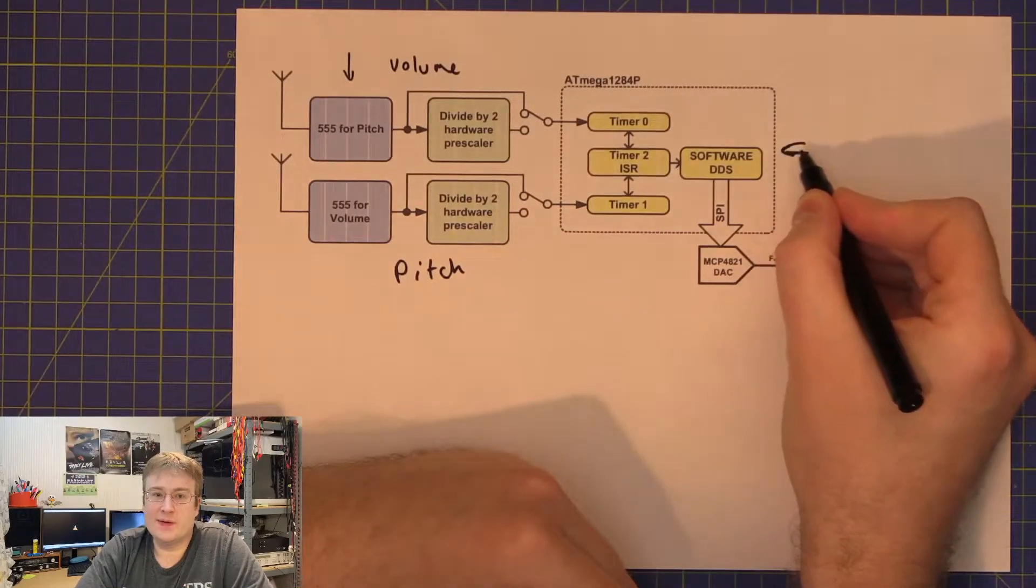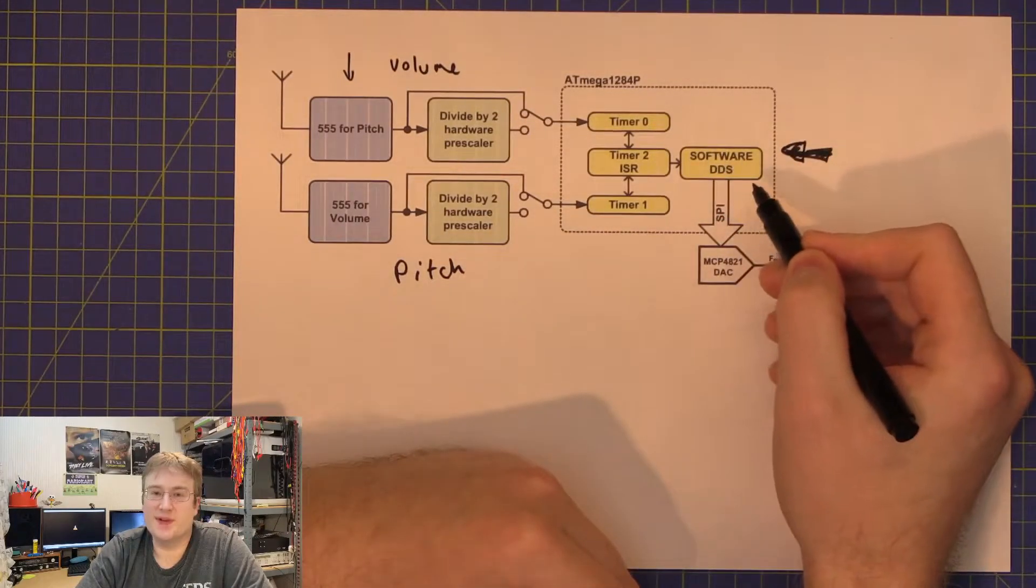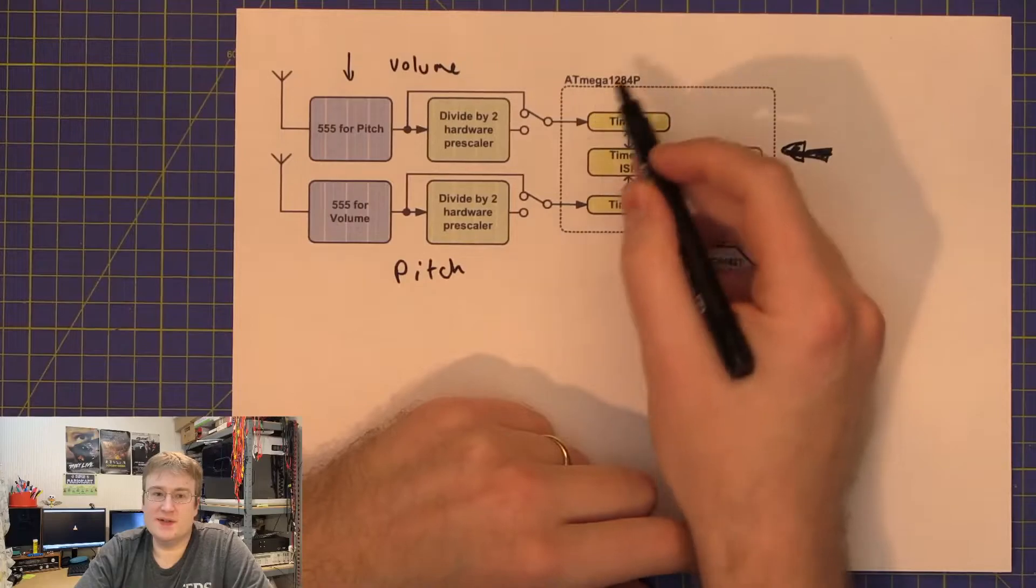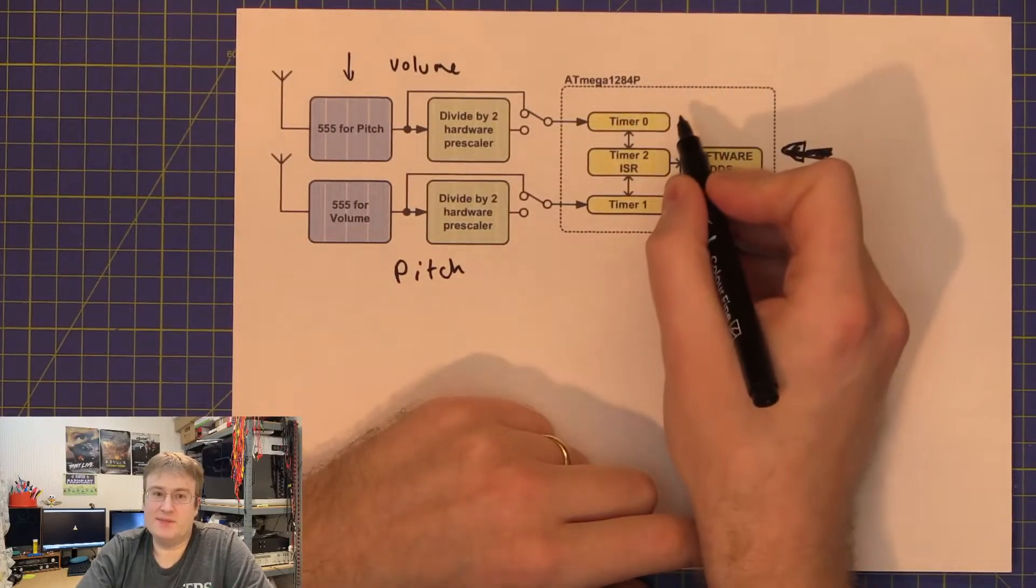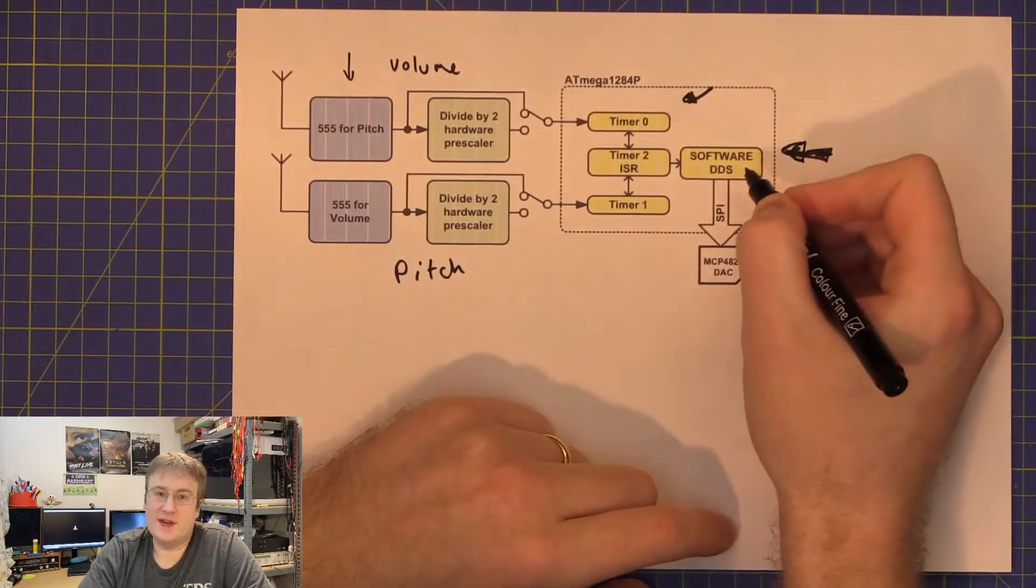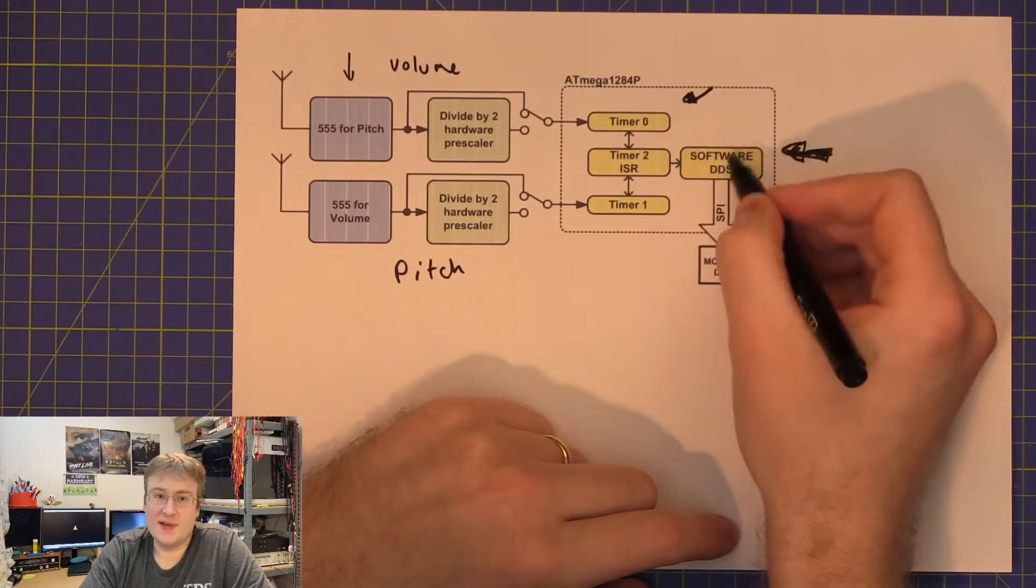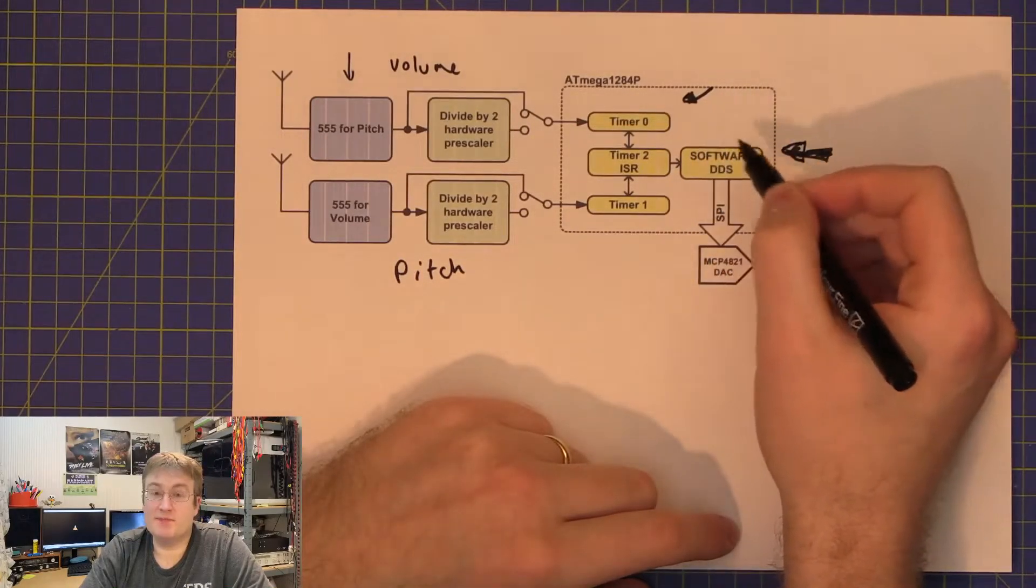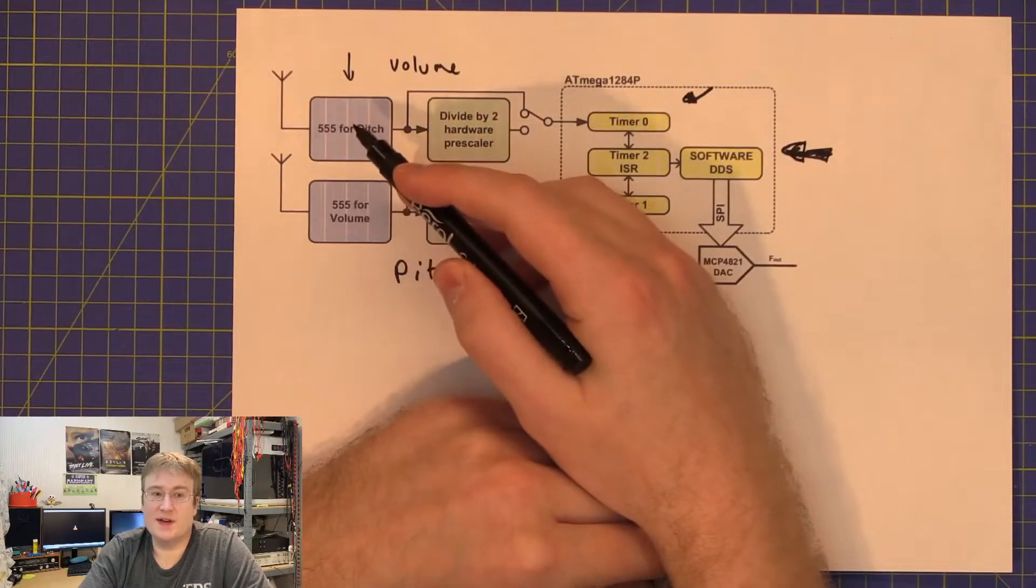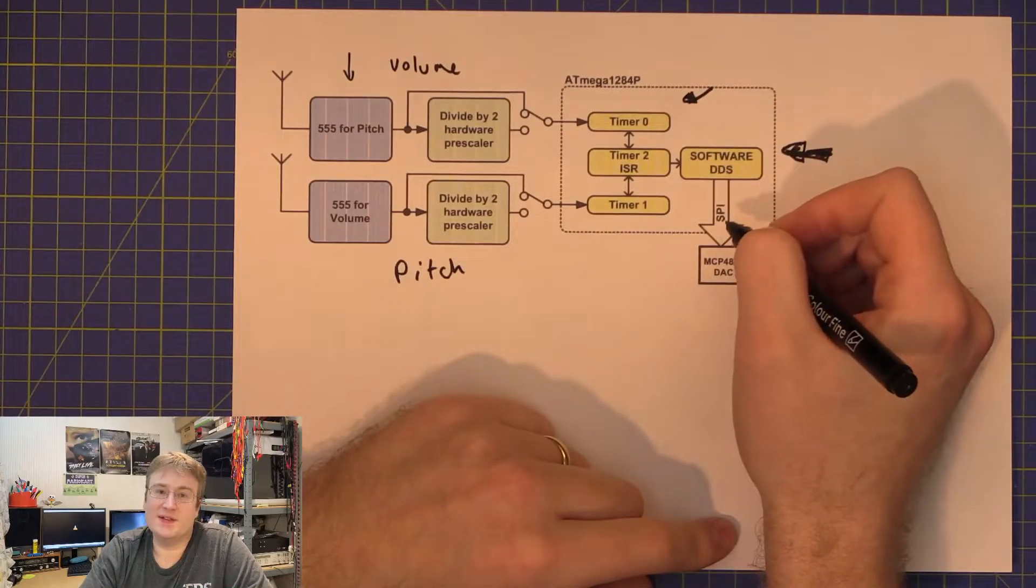In the software for the software DDS, I've also got software control of the amplitude. So essentially the software here is pretty simple. Periodically it measures the frequency of the two 555s, so that involves reading the timer and resetting it back to zero. It's then going to run the software DDS and based upon the relative frequency change of this 555 oscillator it's going to change the frequency of the DDS and it's going to change the amplitude.